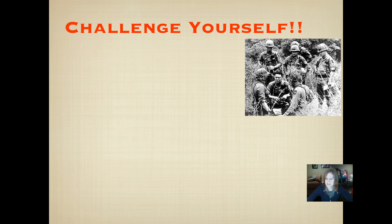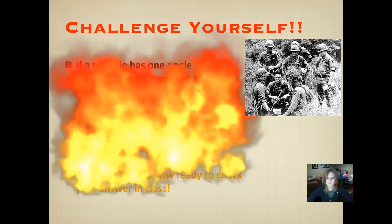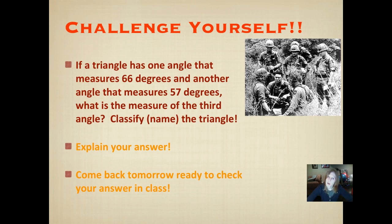It's time to challenge yourself. There's a picture of Colin Powell serving overseas, probably. If a triangle has one angle that measures 66 degrees and another angle that measures 57 degrees, what is the measure of the third angle? Use what you know to figure that out. Also, classify or name that triangle and explain your answer. You're proving it to me. Come back tomorrow ready to check your answer in class.